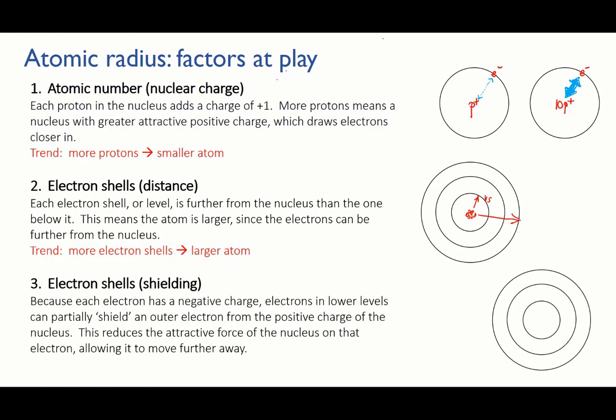The third factor also relates to the electron shells. Electrons in an outer shell don't feel the full force of attraction of the positive nucleus, because the electrons in lower levels form a sort of negatively charged shield. So in larger atoms, electrons in the outer shells feel less attraction from the nucleus, and so are not pulled as tightly towards it. This gives the same general trend as the second factor, so more electron shells, larger atom. So they kind of reinforce each other.